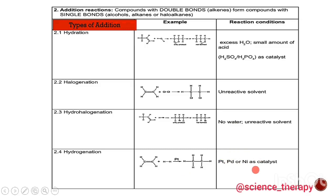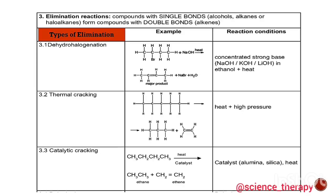The reaction condition for hydrogenation is platinum, palladium, or nickel to act as a catalyst to speed up the chemical reaction. Now we have elimination reactions — this is when compounds with single bonds, alcohols, alkanes, or haloalkanes form compounds with double bonds. The first type of elimination is dehydrohalogenation.